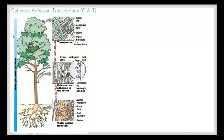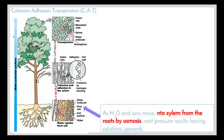Here we have a picture of a large tree — obviously with small plants it's less of an issue getting water from the bottom to the top, but with a plant this size it matters more. As water and ions move into the xylem from the roots by osmosis, root pressure forces the solution upwards. As more water gets drawn in, we have this push of water moving up, and as more enters at the bottom, it pushes it upwards.